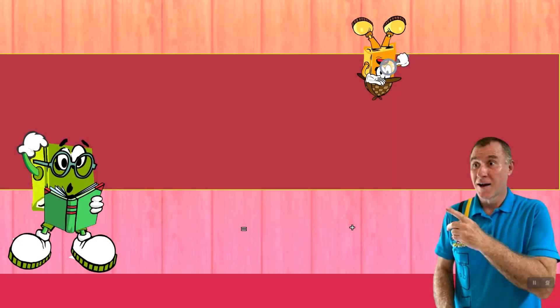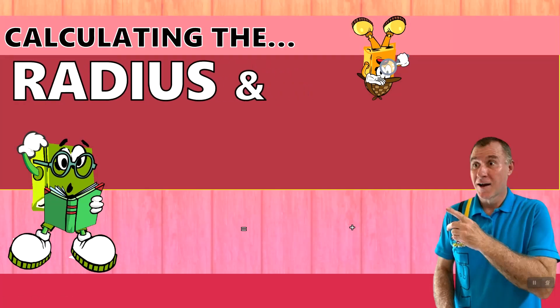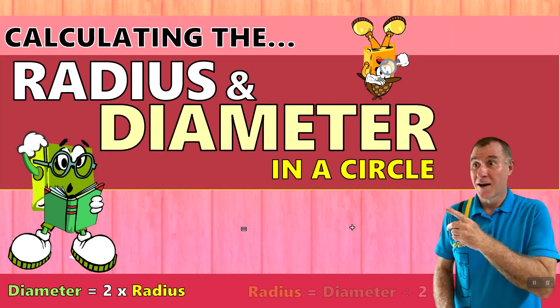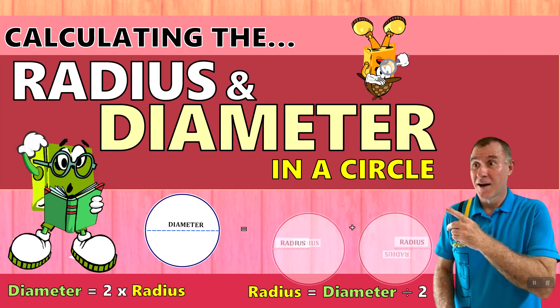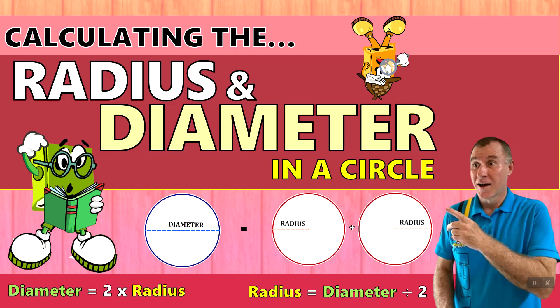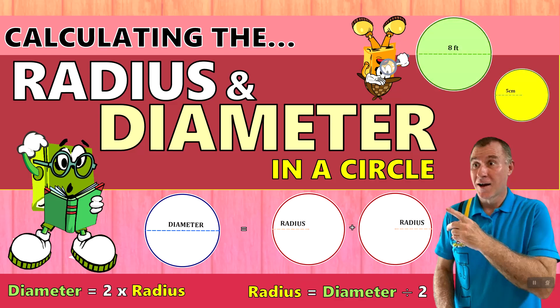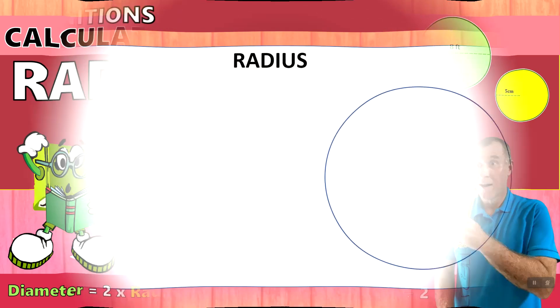Welcome back to Bahamian Mathematics. Please like, subscribe, and share to see more fun videos like this one. In today's video, we will calculate the radius and the diameter in a circle. We will look at the formula diameter equals two times the radius, and radius equals diameter divided by two. Let's take a deeper look.